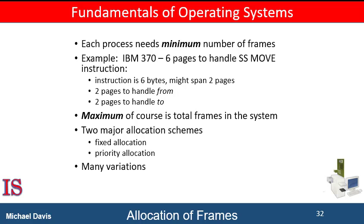For example, consider a machine in which all memory reference instructions may reference only one memory address. In this case, we would need at least one frame for the instruction and one frame for the memory reference. In addition, if one-level indirect addressing is allowed — for example, a load instruction on frame 16 can refer to an address on frame 0, which is an indirect reference to frame 23 — then paging requires at least three frames per process. The minimum number of frames is defined by the computer architecture. For example, if the move instruction for a given architecture includes more than one word for some addressing modes, the instruction itself may straddle two frames. Also, if each of its two operands may be indirect references, a total of six frames are required.